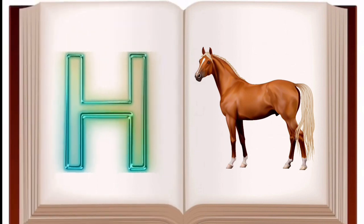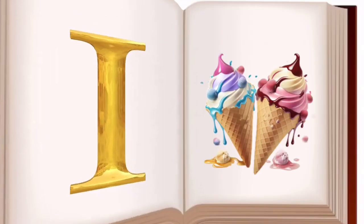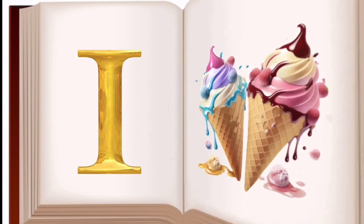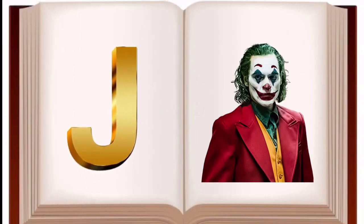Horse means goda. I for ice cream, ice cream means kulphi. J for jokar, jokar mane majak.